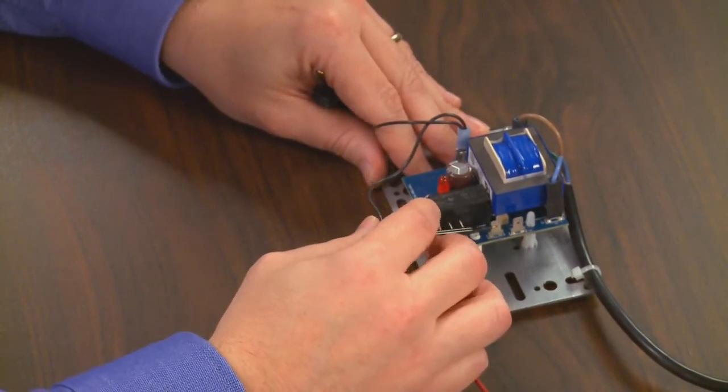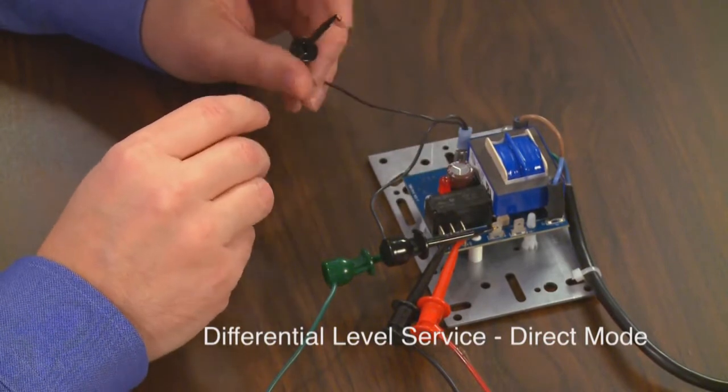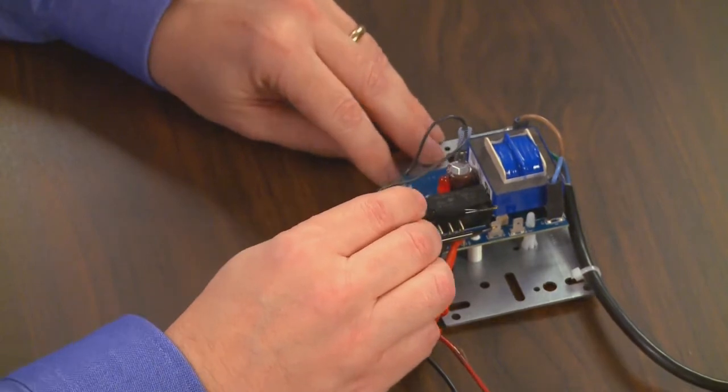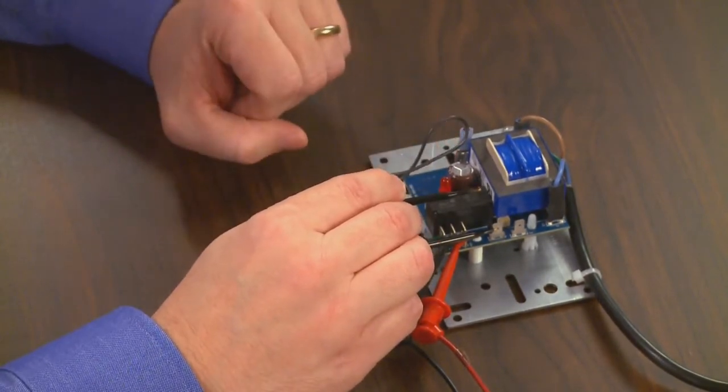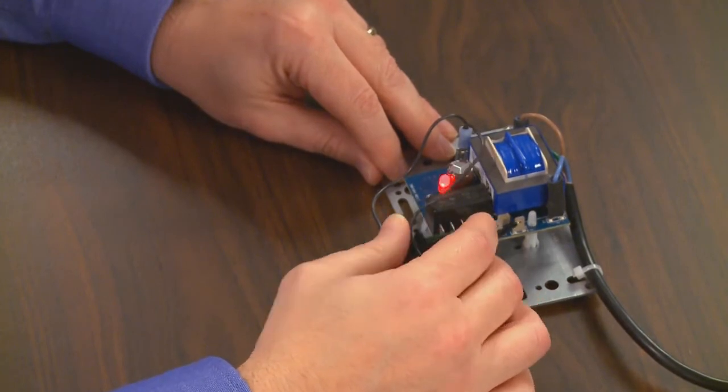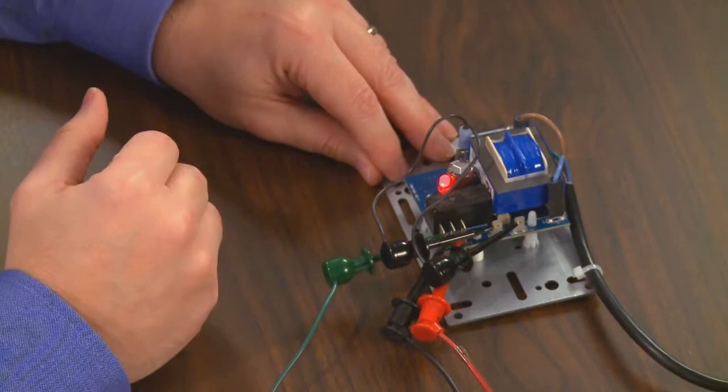As you see the LED remains off meaning the relay is in its shelf state or de-energized state. As the water rises to the high probe simulated by our jumper from the reference point to our high probe connection you notice the LED turns on the relay is now energized.